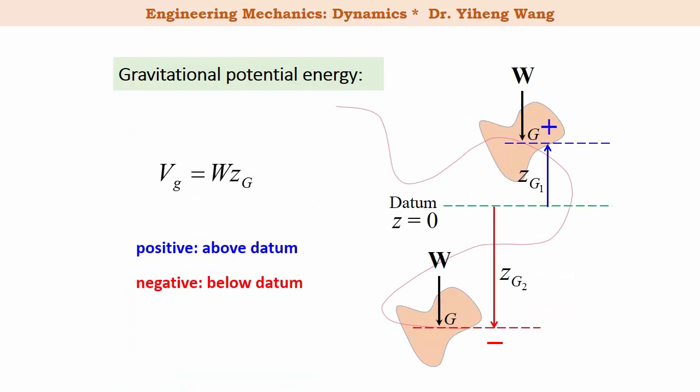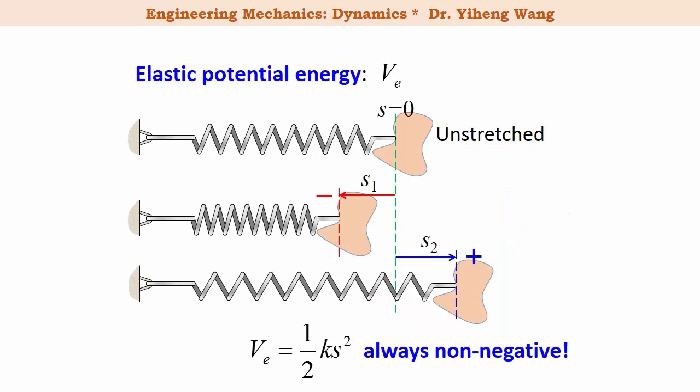For rigid body kinetics, the gravitational potential energy is defined the same way as in particle kinetics. Since the gravitational force always applies at the gravitational center point G, the displacement of the weight force is always measured from the gravitational center. The elastic potential energy is also defined the same way as in particle kinetics — the displacement S of the spring is always measured from its own unstretched neutral position, and the elastic potential energy is always non-negative.